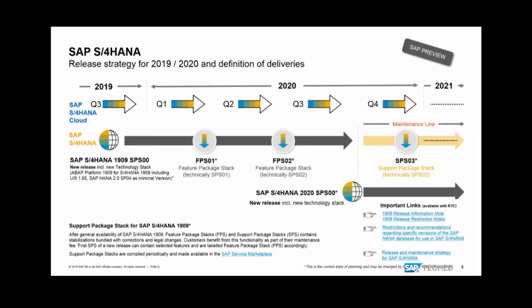This slide illustrates the release strategy. S/4HANA Cloud has four release shipments per year, which are implemented automatically in the system — no action needed from you. In S/4HANA On-Premise, we offer one major release per year, followed by two feature pack stacks — functional roundups with smaller innovations — typically four months after the release. Around one year later, the new release arrives, and the previous release enters maintenance supported via support packages. The most recent release is 1909 On-Premise, which shipped last Friday.